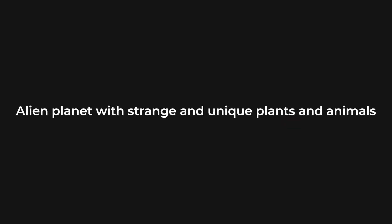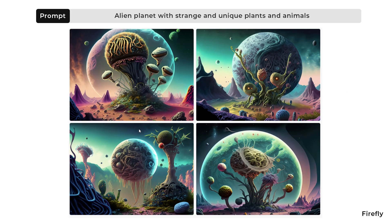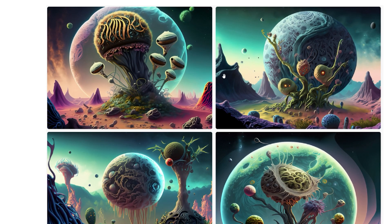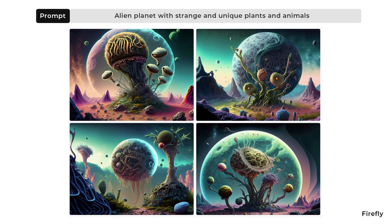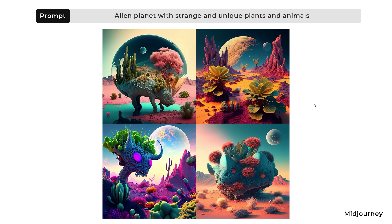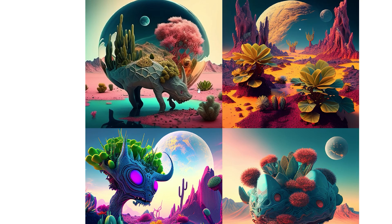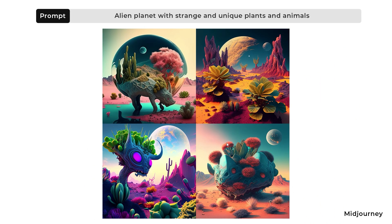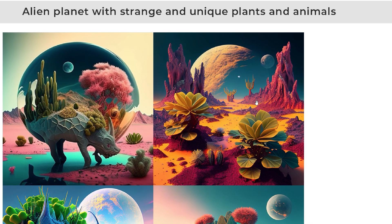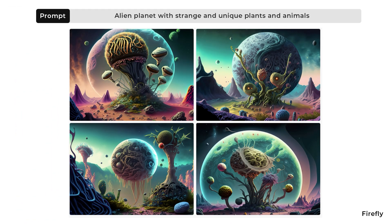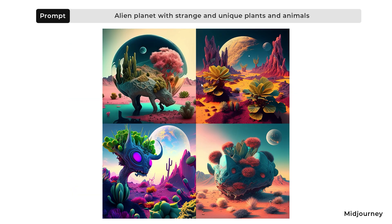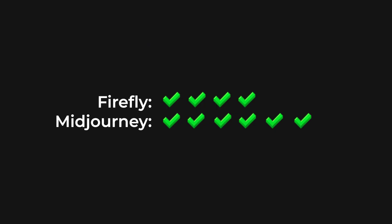For the last prompt, I asked to create 'an alien planet with strange and unique plants and animals.' Firefly produced an alien planet with strange plants, though no animals are visible. I really like the Firefly results here. The Mid Journey results are very vibrant with a couple of creatures and some plants visible. Both platforms gave similar results overall, but with slight differences in color and composition. I'll give this one to Mid Journey as well.